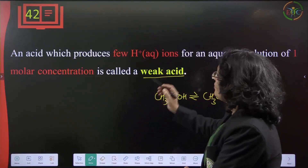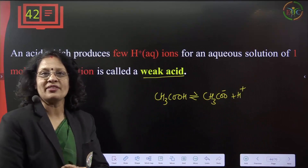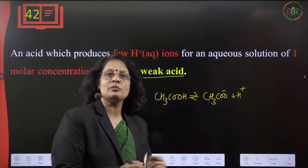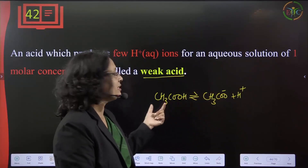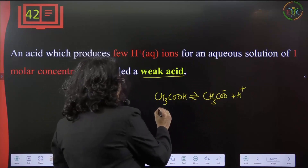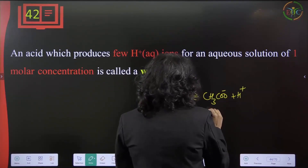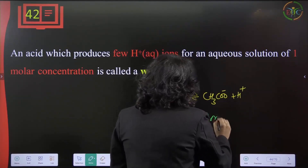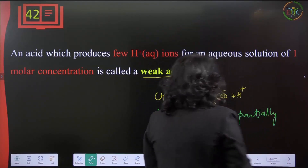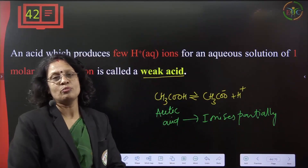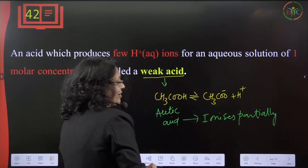A weak acid produces few H⁺ ions in an aqueous solution of one molar concentration. Its ionization is partial, shown by a reversible arrow. Some ions as well as some undissociated molecules are present. For example, acetic acid ionizes partially — fewer ions are produced because undissociated acetic acid molecules are also present. These are called weak acids.